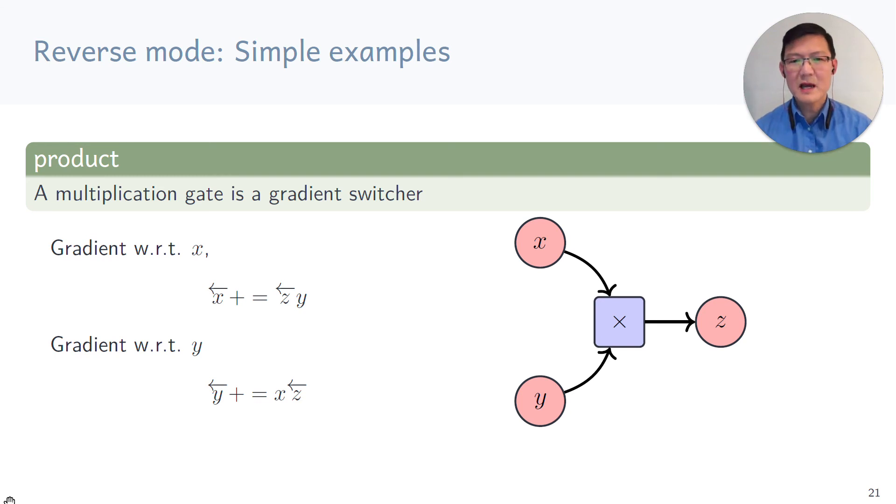If you apply the same reasoning to multiplication, you can see that multiplication is actually a gradient switcher. So the output gradient, the output adjoint Z gets multiplied by the other input variable Y to produce the gradient of X. And vice versa, the gradient of Y is the gradient of the output variable Z multiplied by the other argument X.